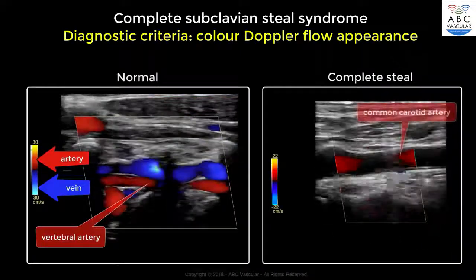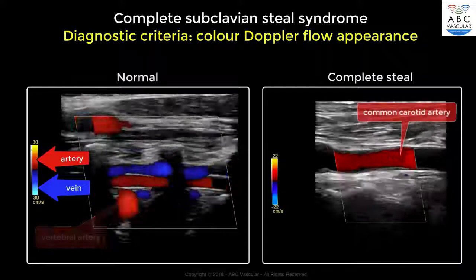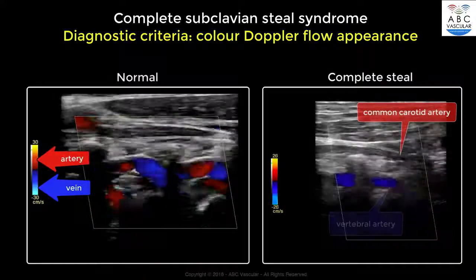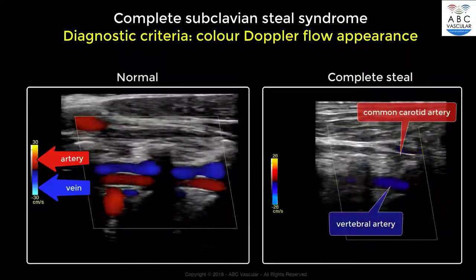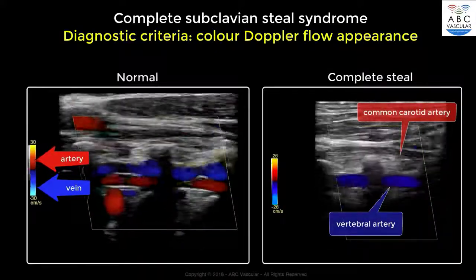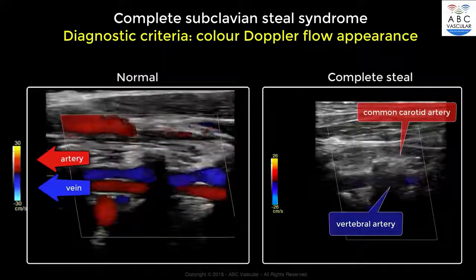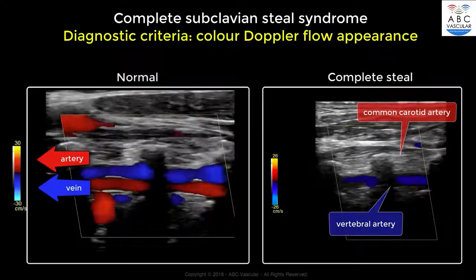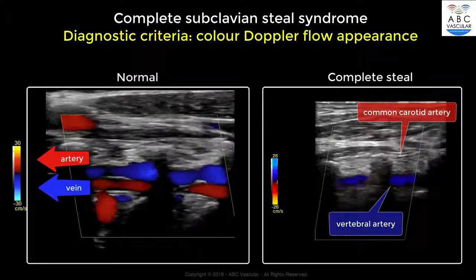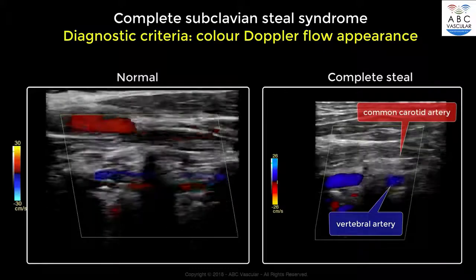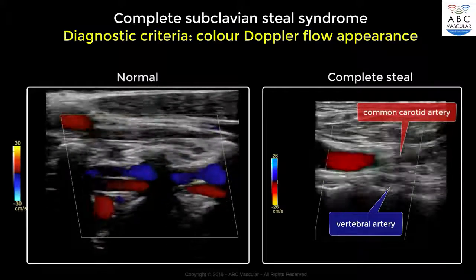In the presence of a complete steal, while the common carotid artery will appear in red, the vertebral artery will appear in blue, thereby indicating the different direction of flow through the vertebral artery compared to the ipsilateral common carotid artery.